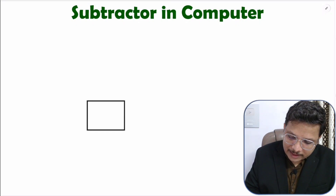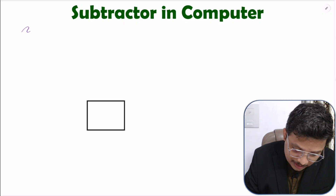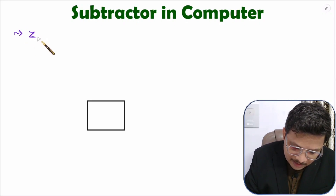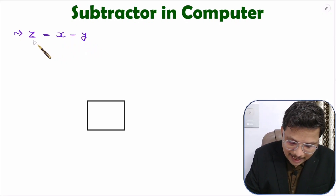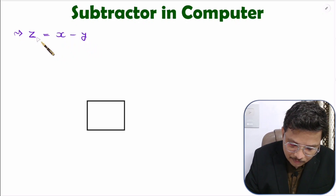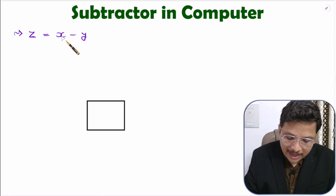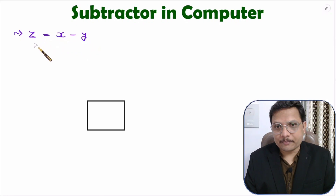When we talk about subtraction in layman's language, you should know that if you write z equals x minus y, then simply we have performed the subtraction of x minus y, giving us z.